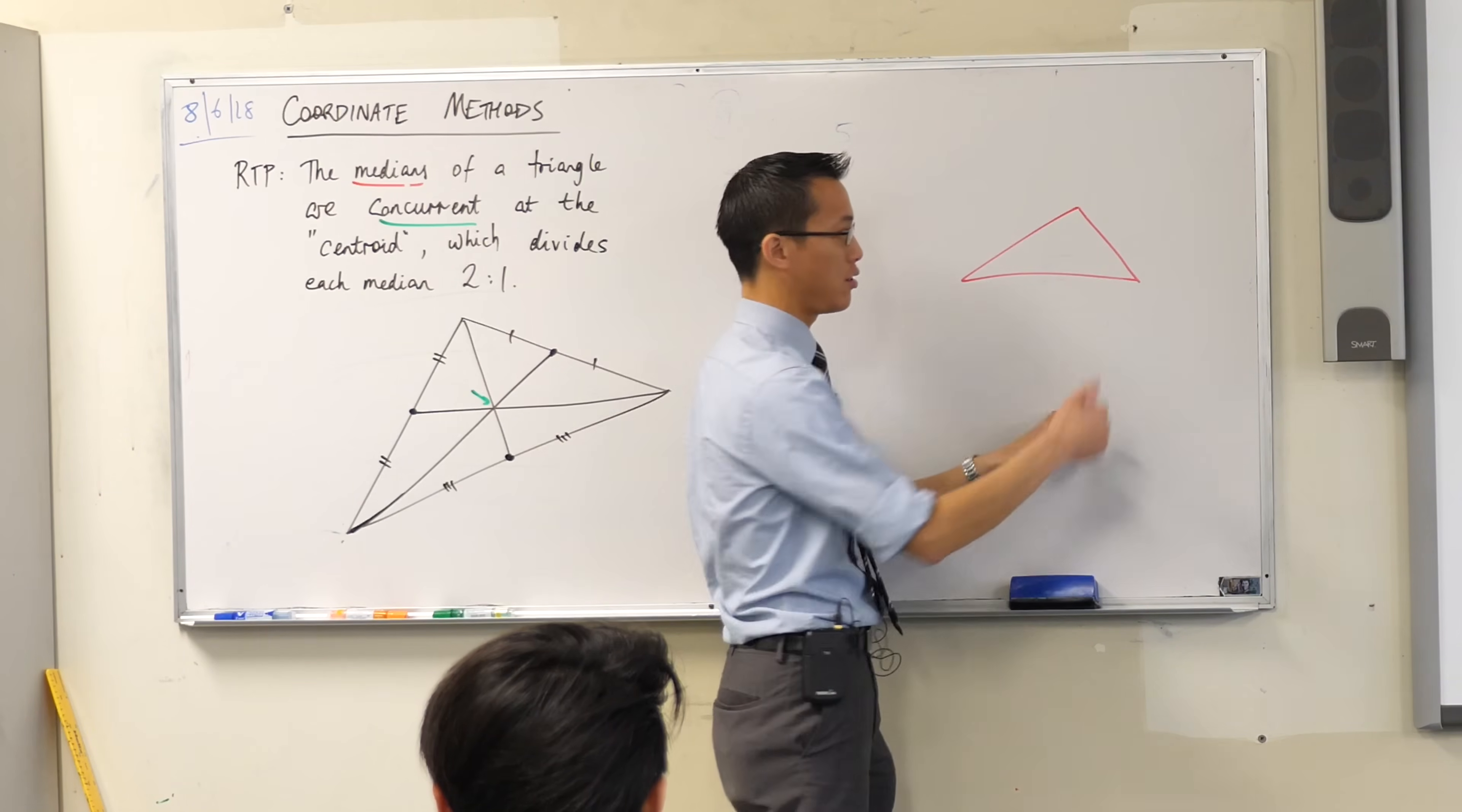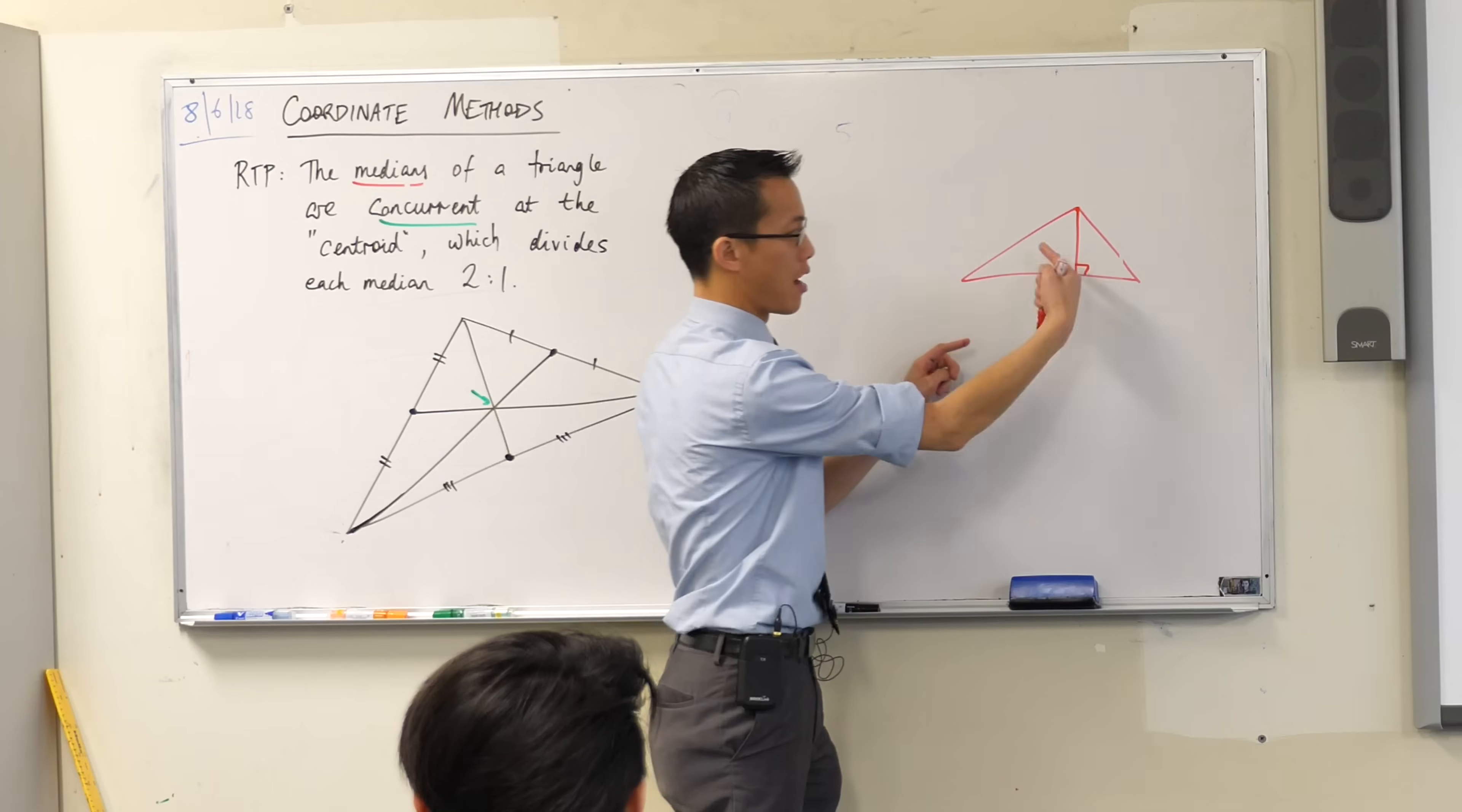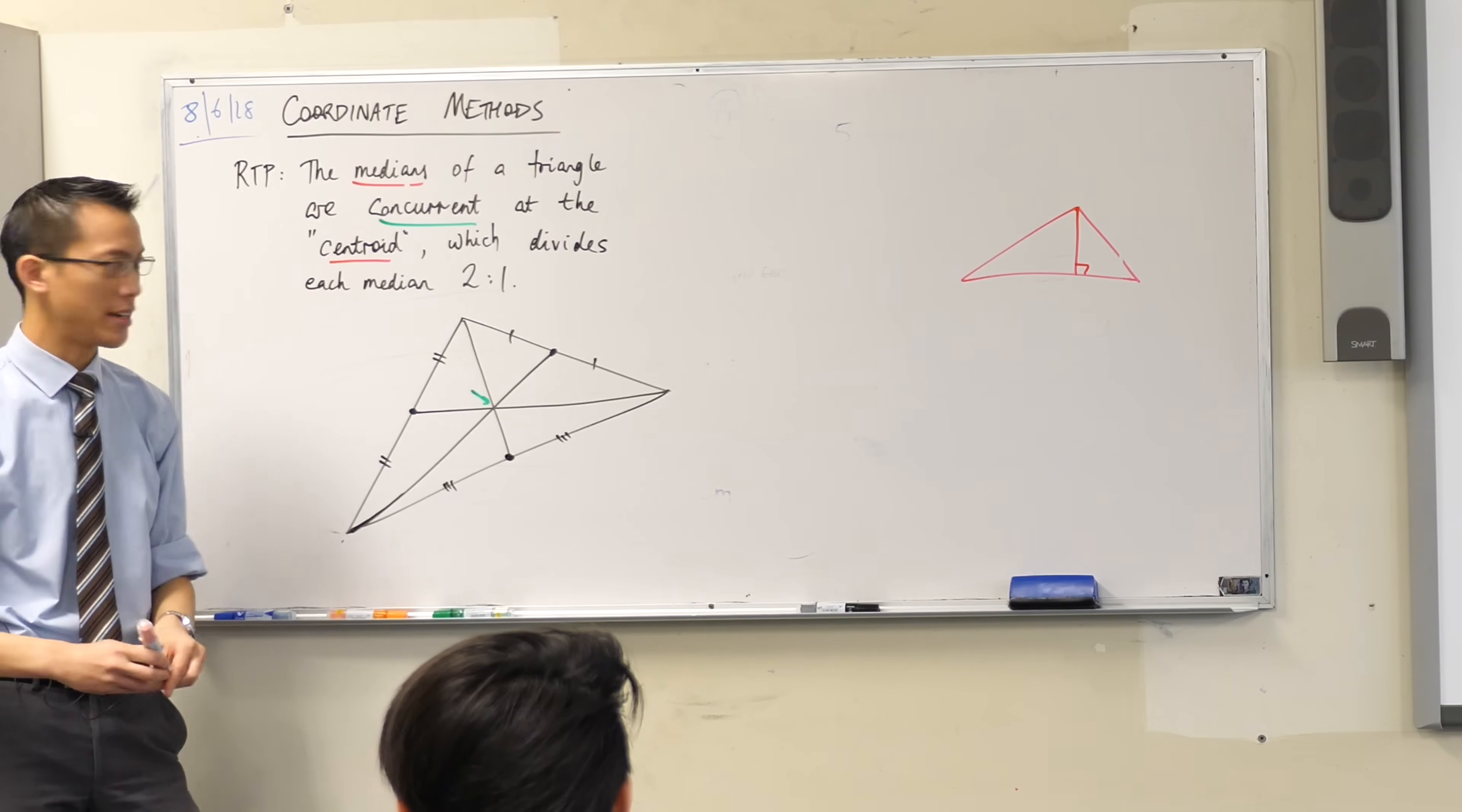So, in a triangle like this, an altitude would be a line like that, right? It's the height, from one point directly below. And of course, you've got other altitudes in this triangle, from other points of view, okay? You can meet all of those up, you get another center of the triangle, but the centroid is the one we're interested with, the medians.